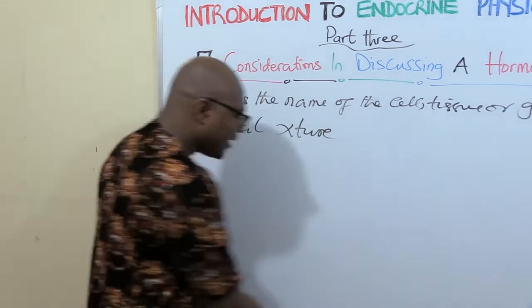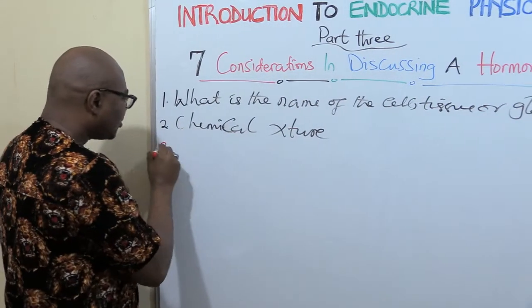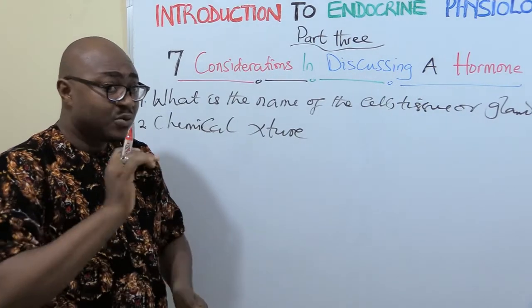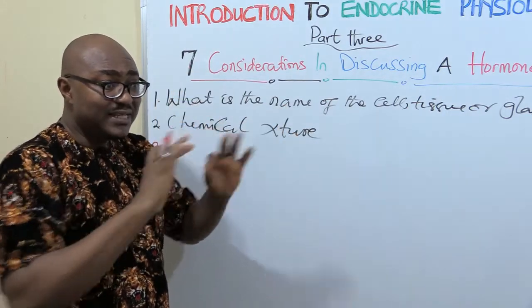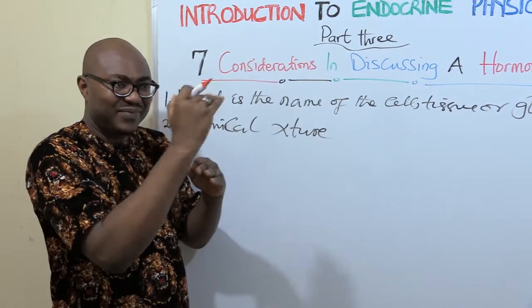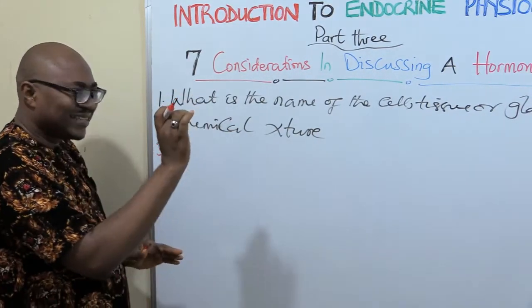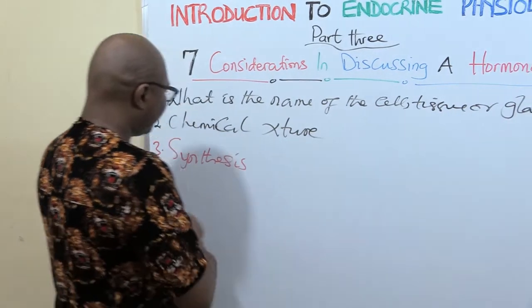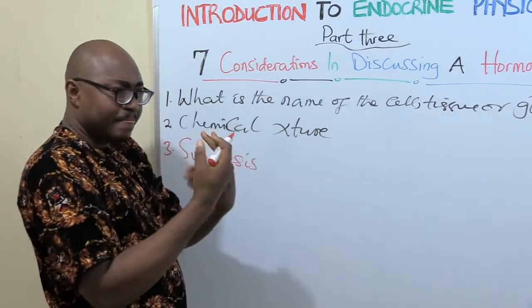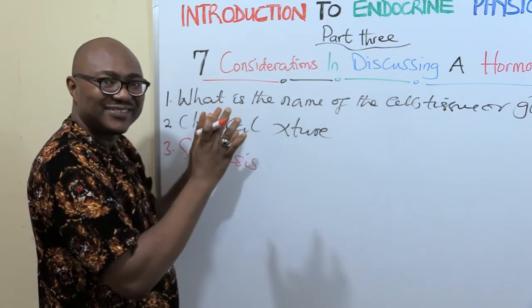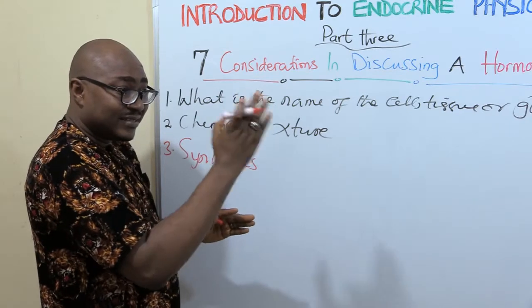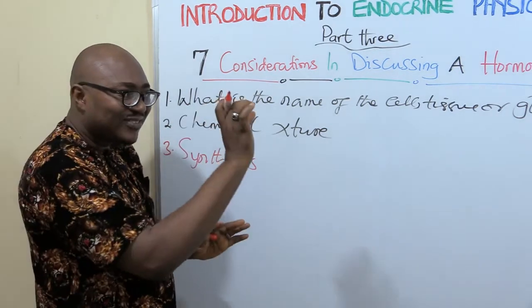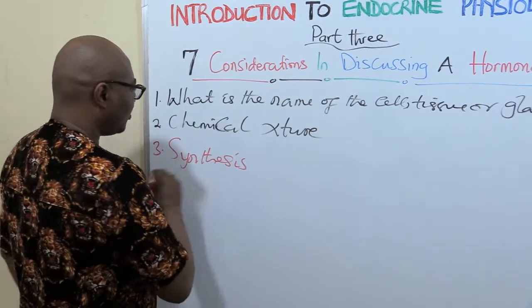The next thing is the synthesis — how is this hormone synthesized? There are some hormones for which you need to mention the synthesis because it's vital to understanding the hormone. A very good example is the thyroid hormone, which has about six or seven unique steps in its synthesis unlike other hormones. Another example: testosterone and estrogen come from cholesterol, and for adrenal hormones, if an enzyme in the steps is missing, it can lead to common disorders. So you need to know some of those synthesis steps.